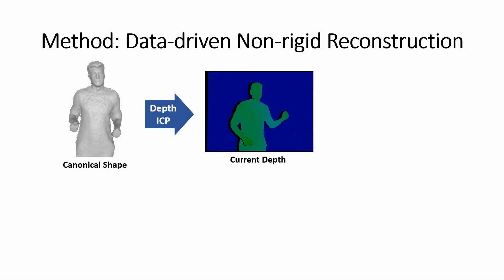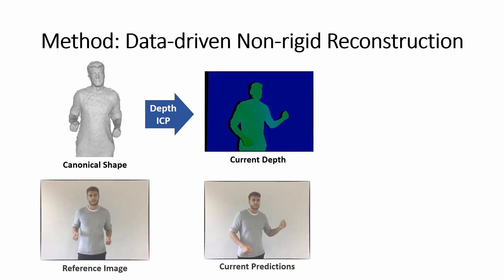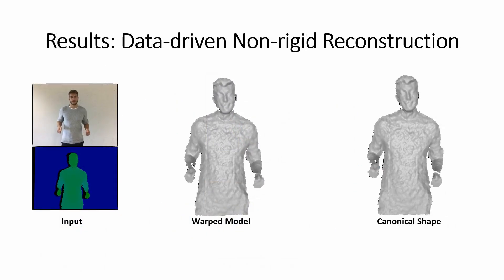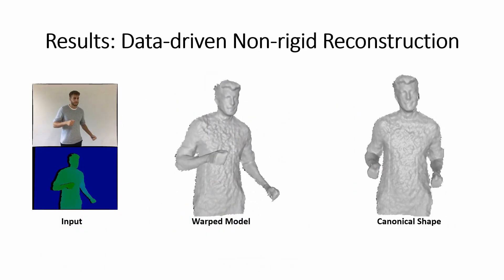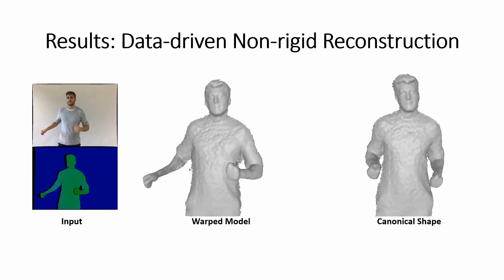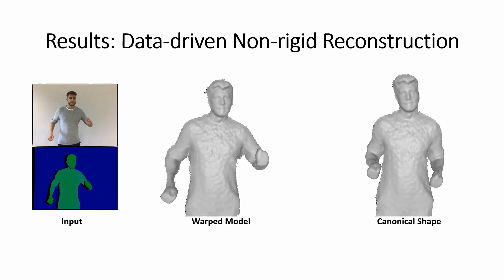Our non-rigid reconstruction framework follows the dynamic fusion pipeline and employs depth ICP constraints to align the canonical shape to the current depth map. In addition to the depth constraints, heatmap correspondences are also employed for every deformation node. We show some qualitative reconstruction results using our data-driven non-rigid reconstruction approach. The model tracking is visualized in the middle, while the canonical shape is shown on the right.